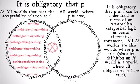If you know categorical logic, this should look very familiar. It is obligatory that P in I can be understood as an Aristotelian categorical logic universal affirmative statement. All AI worlds are also worlds where P is true, since by definition an AI world is a world where all obligations in I are true. There's no way for all of the obligations in I to be met, P to be an obligation in I, and P to be false in some world where all of the obligations in I are met.